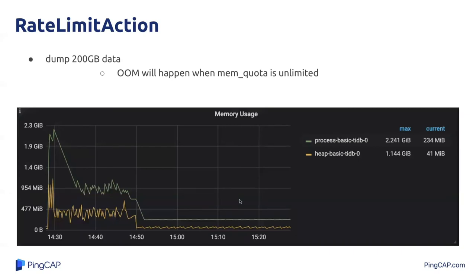This graph shows the effectiveness of the rate-limit action. The test case we use here is to dump almost 200GB of data from TIDB. Before we set the memory quota to a limited value, OOM will happen and the TIDB process will be killed by the OOM killer. Then, we set the memory quota to 1GB. The process runs successfully and the memory usage is shown in the graph. In the first 3 minutes, the memory usage reaches the threshold. Then the rate-limit action is triggered. After that, the memory usage converges to almost 500MB until the dump task is finished.